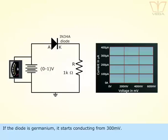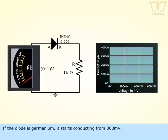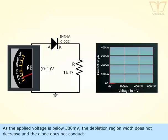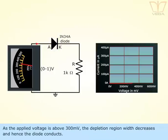If the diode is germanium, it starts conducting from 300 millivolts. As the applied voltage is below 300 millivolts, the depletion region does not decrease and the diode does not conduct. As the applied voltage is above 300 millivolts, the depletion region decreases and hence the diode conducts.